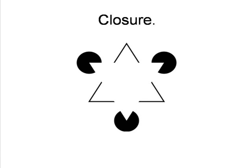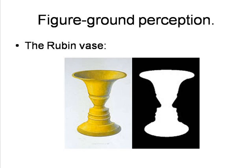For example, we see an implied shape, as in the famous illusion of the Kanizsa triangle, where we see a white triangle that does not actually exist, and behind it, through the law of continuation, we see a black-lined triangle.